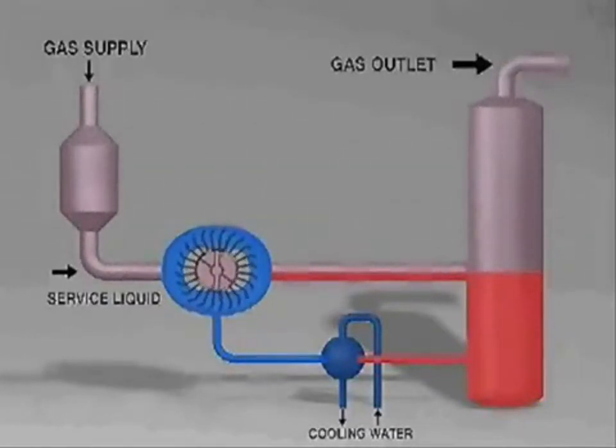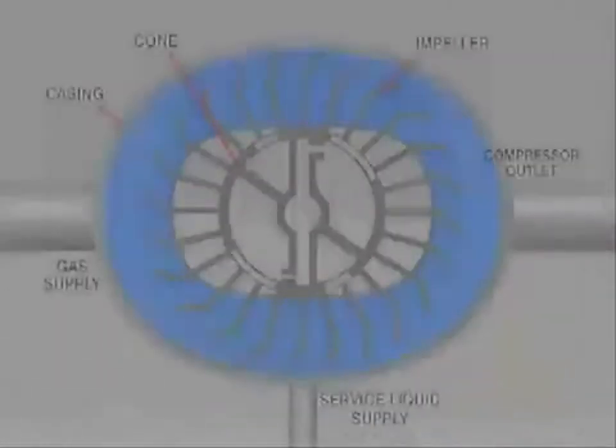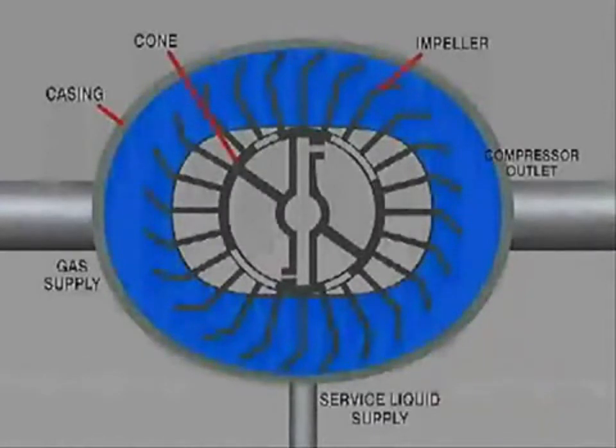Here the gas is separated by gravity, and after cooling through a heat exchanger, it re-enters the compressor. Let us now analyze in detail the working cycle of a liquid ring compressor.